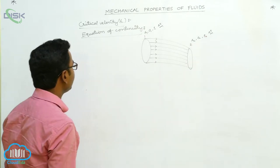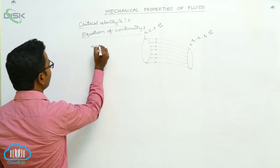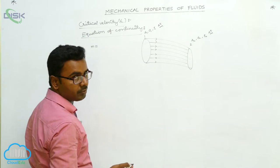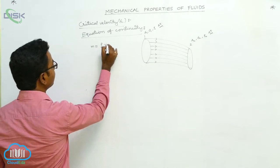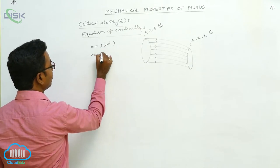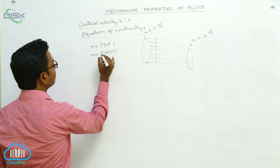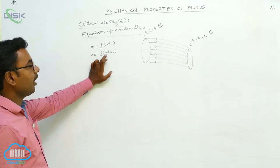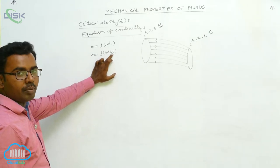Now, how do we write the mass? According to the density formula, density equals mass divided by volume, so mass equals density multiplied by volume. Therefore, mass is equal to density Rho times volume. The volume can be written as A times V times delta t, where A is the area of cross-section, V is the velocity, and delta t is the time interval.